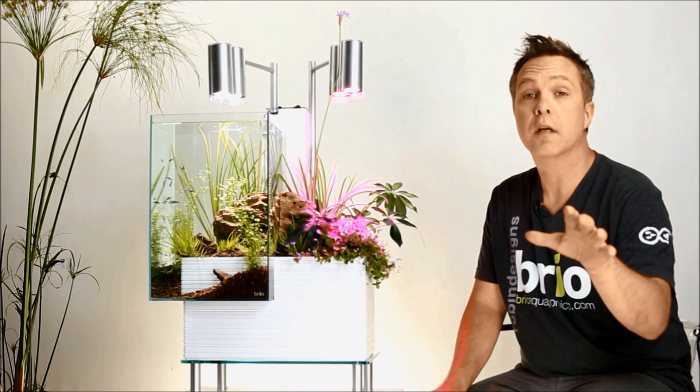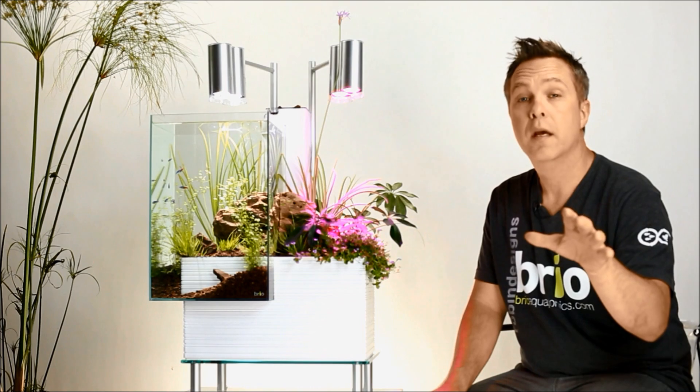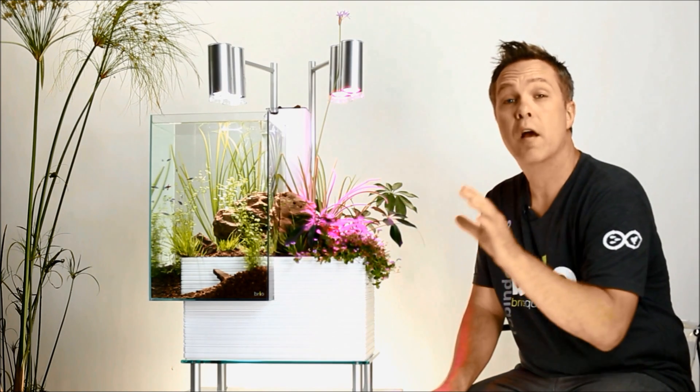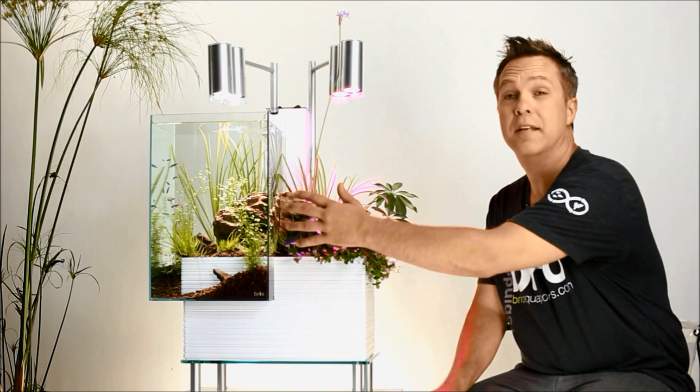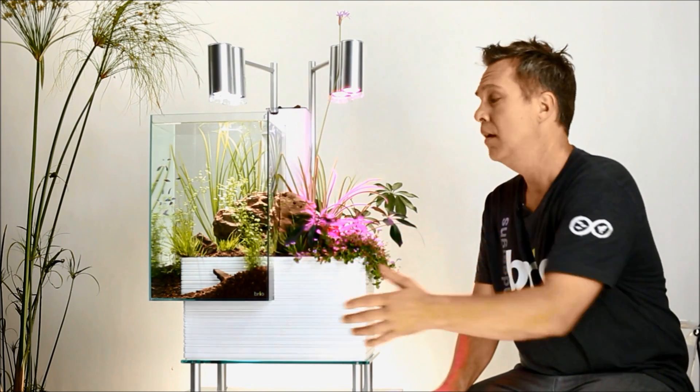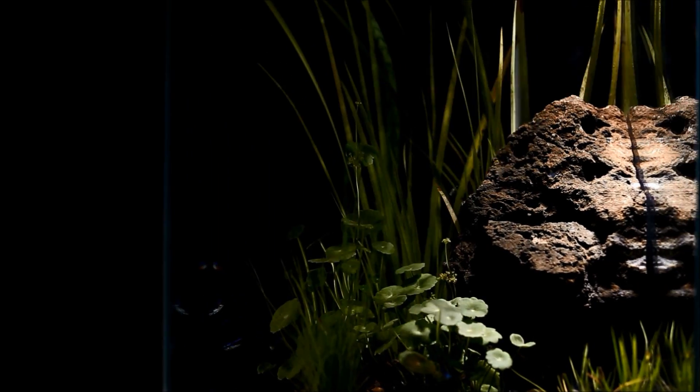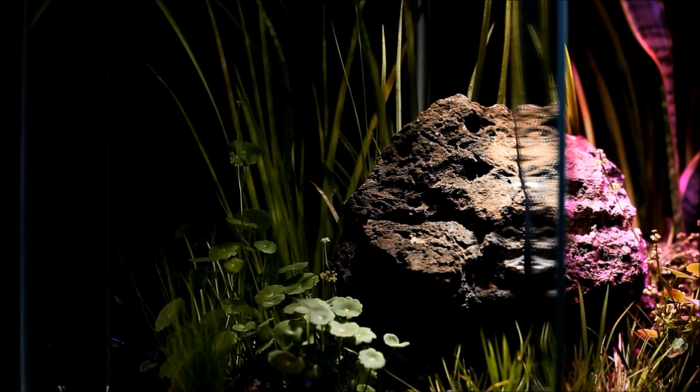Brio is very different compared to other aquaponics systems. It's the first system that's a side-by-side configuration. This allows very easy access to inside of your aquarium for maintenance and full access to your garden. Also, it provides a multitude of great aquascaping possibilities.